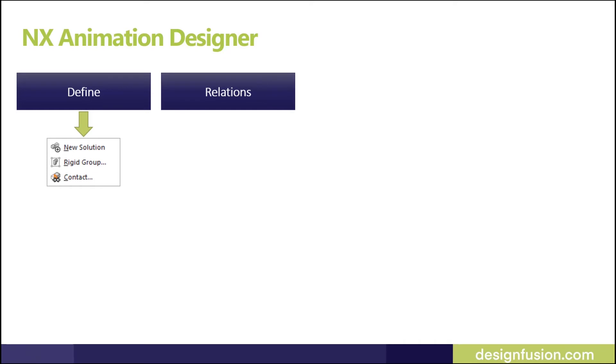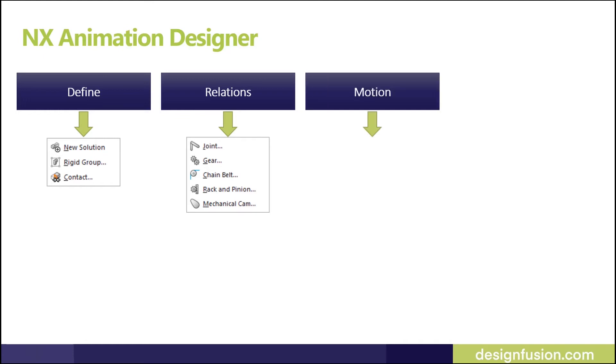Now we can discuss some basic steps before starting Animation Designer. There are four basic steps to create an animation. The first step is Define — here you define a body or geometry for the animation. The second step is Relation — here you assign a relation to the defined body. The third step is Motion — here you can apply different types of motion to your related bodies.